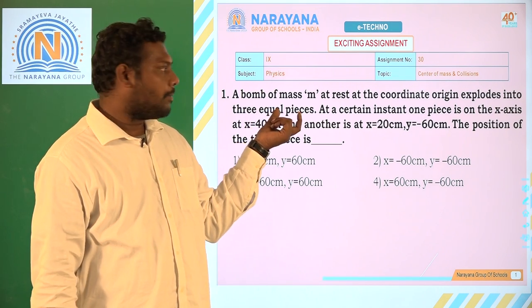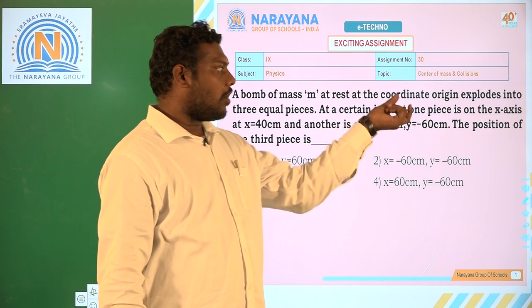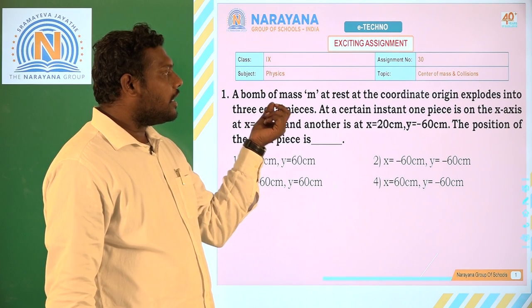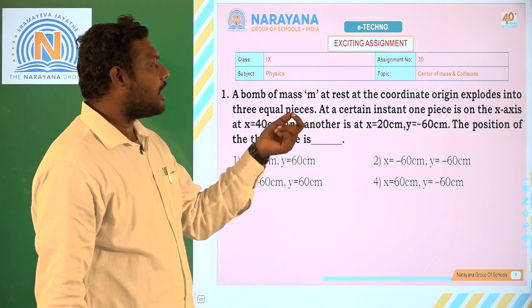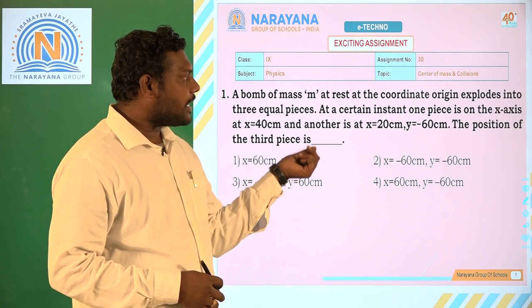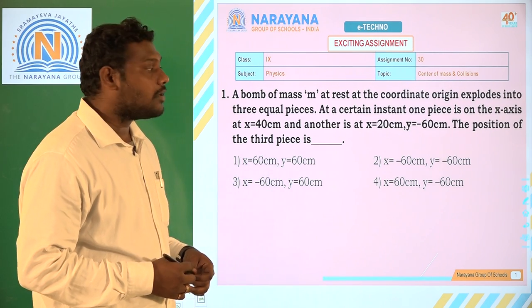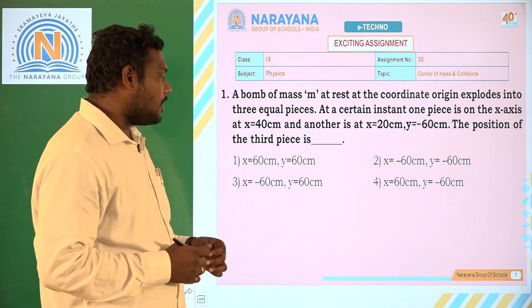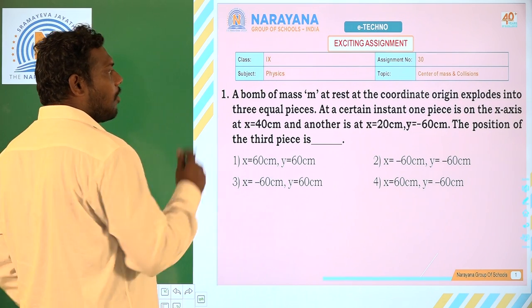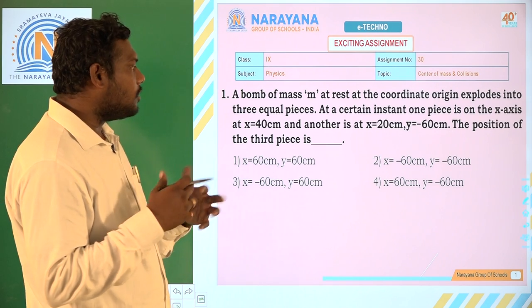A bomb of mass M at rest at the coordinate origin explodes into 3 equal pieces. At a certain instant, one piece is on the x-axis at x=40 centimeters and another is at x=20 centimeters, y=-60 centimeters. The position of the 3rd piece is what? Now, what they say, a bomb of mass M explodes into 3 equal parts.